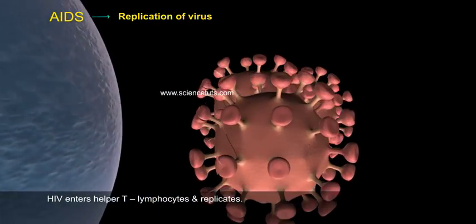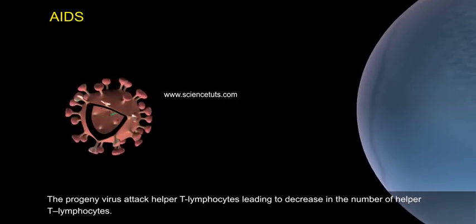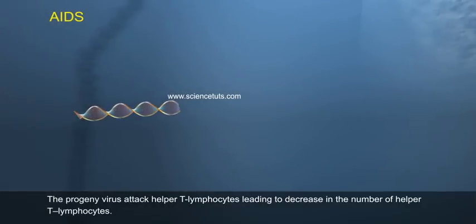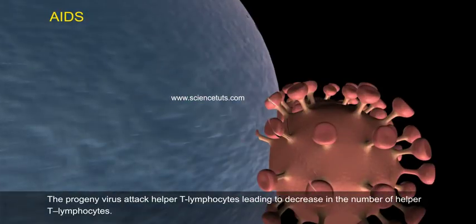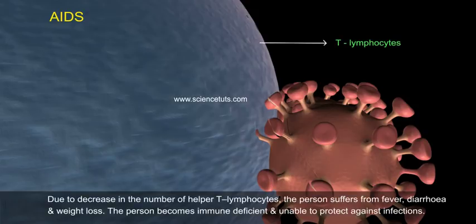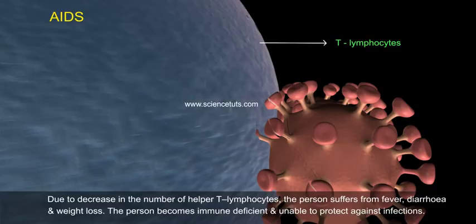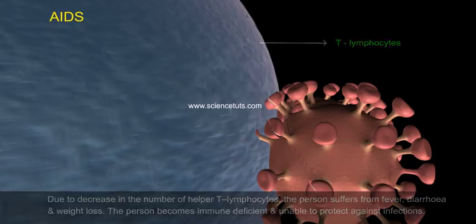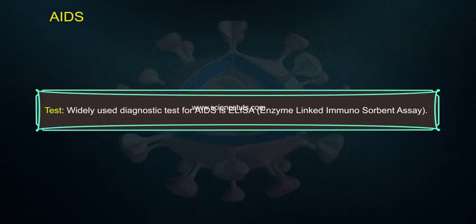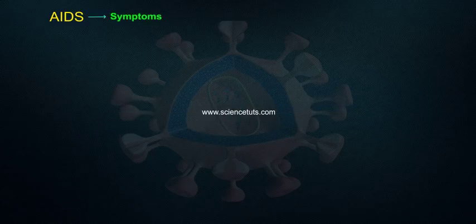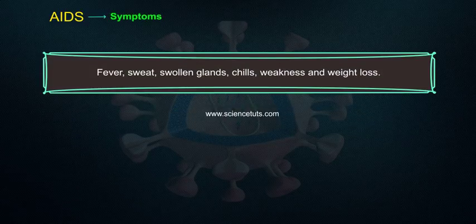HIV enters helper T lymphocytes and replicates. The progeny virus attack helper T lymphocytes, leading to a decrease in their number. Due to this decrease, the person suffers from fever, diarrhea, and weight loss, becomes immune deficient, and is unable to protect against infections. The widely used diagnostic test for AIDS is ELISA — Enzyme Linked Immunosorbent Assay. Symptoms include fever, sweat, swollen glands, chills, weakness, and weight loss.